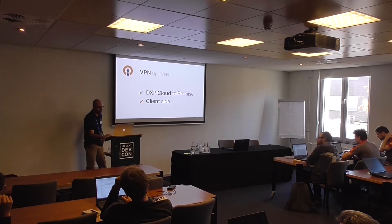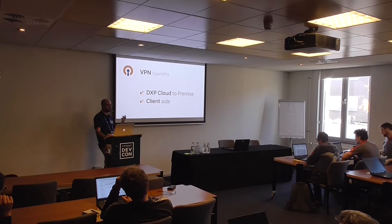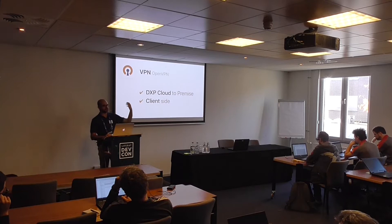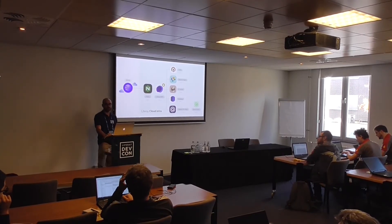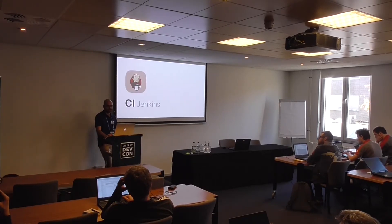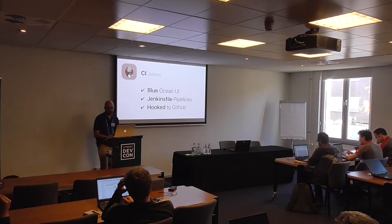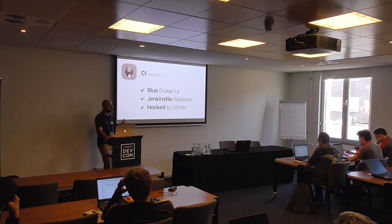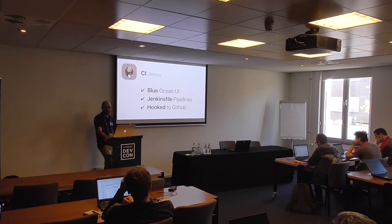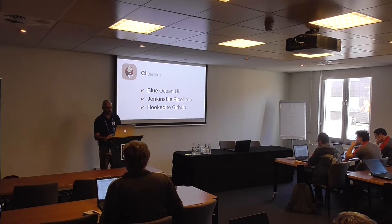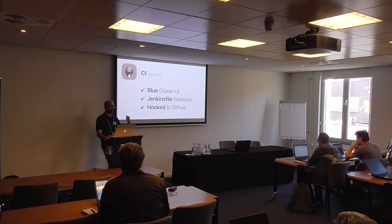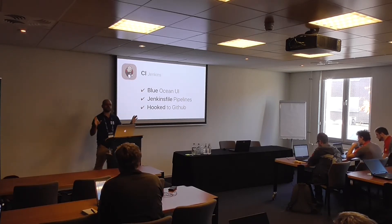VPN: our implementation is OpenVPN. We only have the option to configure it as a client — DXP Cloud will be a client of an OpenVPN server. We're looking to add Cisco VPN as well — to be discussed next week. Jenkins: we have the Blue Ocean UI, a more modern UI. Everything is defined with a Jenkinsfile using pipelines. It's already hooked to GitHub — once we create the environment for you, everything is set up. You don't need to manually integrate Jenkins; once you push a commit, Jenkins builds automatically.